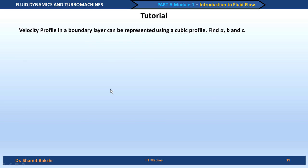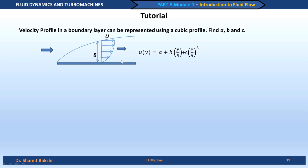The second problem is about the velocity profile in a boundary layer. The boundary layer is the region within which viscous effects are important. The velocity profile is given as a cubic: u(y) = a + b·(y/δ) + c·(y/δ)³, where δ is the boundary layer thickness. The question is: can we find the constants a, b, and c using boundary conditions related to no-slip and Newton's law of viscosity?